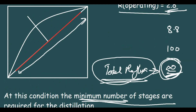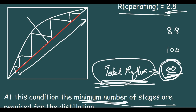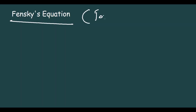I have shown in previous videos how to draw the stages by constructing step-wise lines. But in the total reflux case, we do not need to draw any lines. We can find the number of stages required using a simple equation known as Fenske's equation, which is only applicable for total reflux.